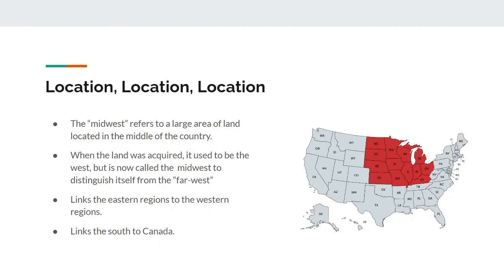Years later, when those states finally came into existence, they became the West, and the Midwest, which was once called the West, became the Midwest. In addition, the Midwest, being located in the middle of the United States, makes it an important region connector. It connects the eastern states with the western states and links Canada to the southern states.